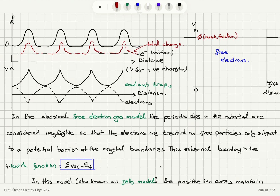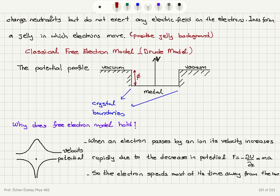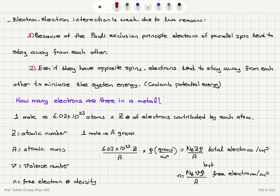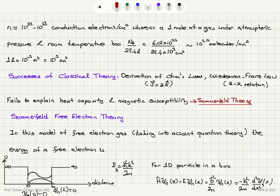In the jelly model, the positive ions create a jelly background. We discussed why a classical free electron theory should hold, and how to calculate the conduction electron density: Avogadro's number times the valence number times density, divided by atomic mass — giving a value two to three orders of magnitude larger than gas molecule density under normal conditions. The classical Drude theory can explain Ohm's law and the Wiedemann-Franz law, but fails to explain heat capacity and magnetic susceptibility.